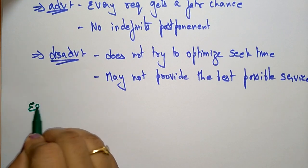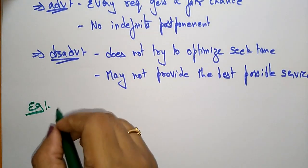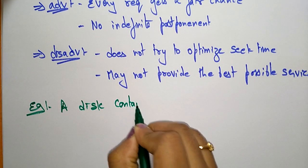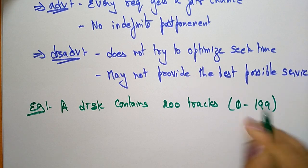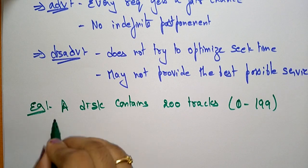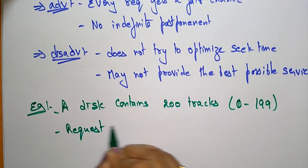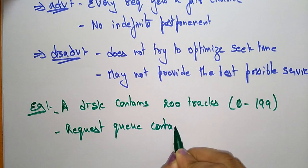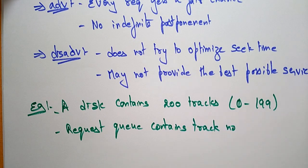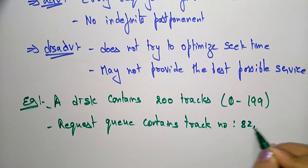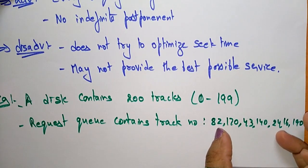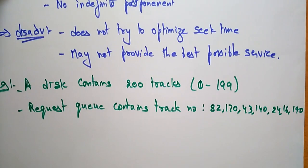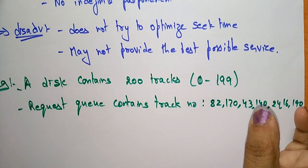Now let's take an example. A disk contains 200 tracks, numbered 0 to 199. The request queue — the disk queue — contains the following track numbers: 82, 170, 43, 140, 24, 16, and 190. These are the tracks where data must be read or written. We need to schedule which track to visit first.